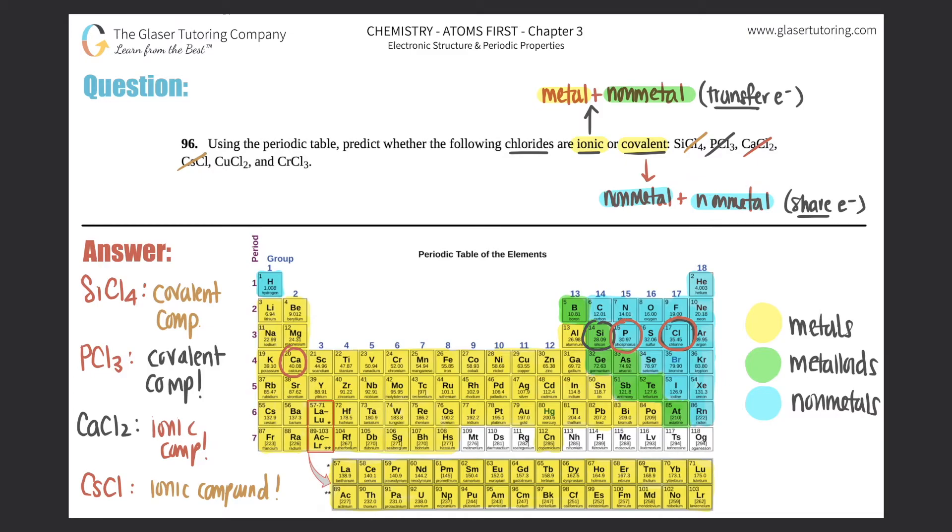Next one. And I'll put the other one on the right-hand side. CuCl2. We have now copper. Oh, well, we should know that copper is a metal. But just in case, copper is over here. Number 29. It's in yellow. Yellows are metal in my diagram here. So it's obviously going to be an ionic compound. Transfer of electrons.